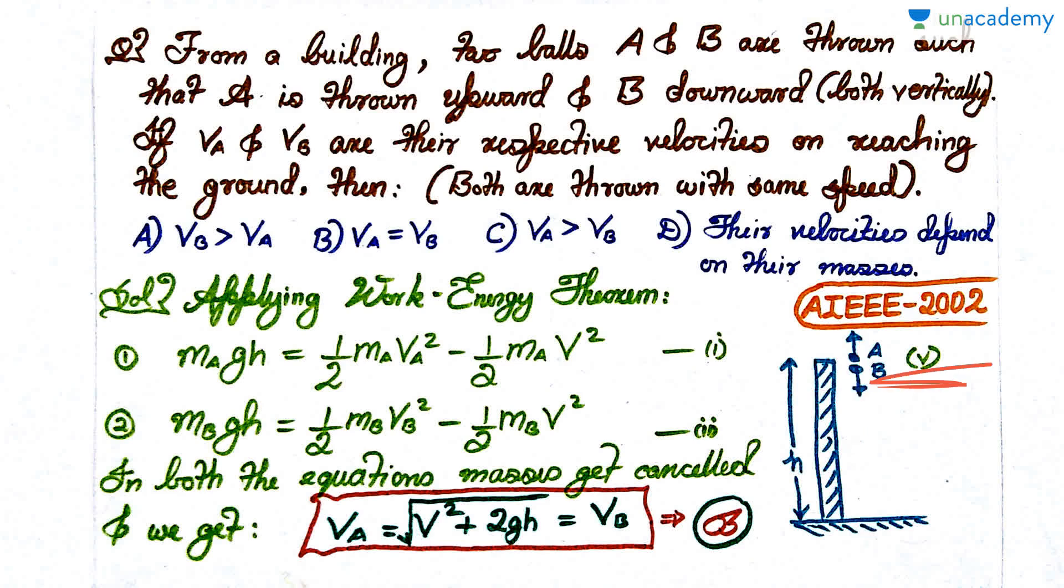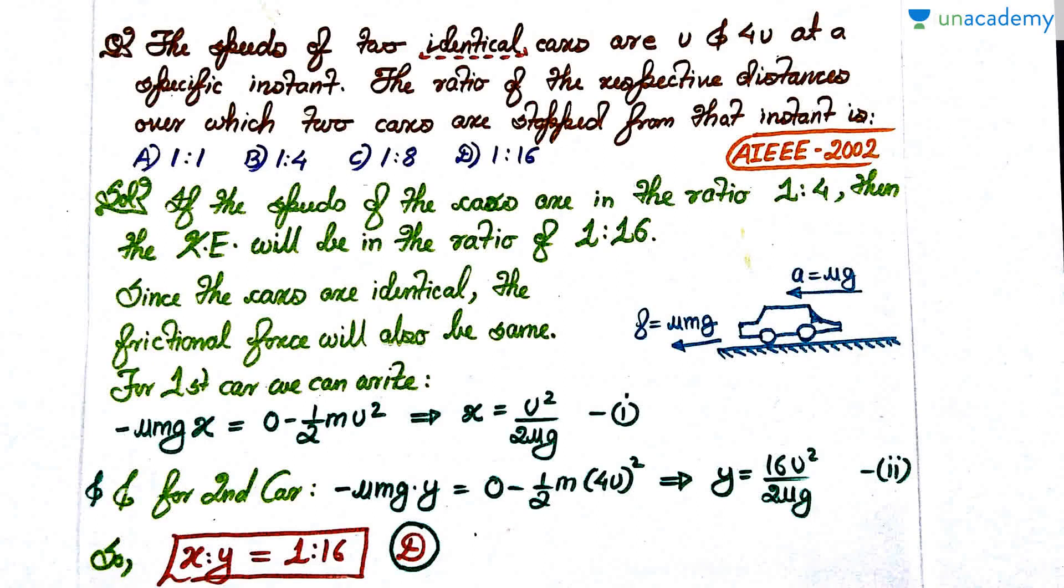V² equals U² plus 2aS. U is obviously same, the displacement is same, the acceleration due to gravity is same, so obviously the final velocity, the magnitude of the final velocity, will also be the same. That's the two ways in which you can solve this question.